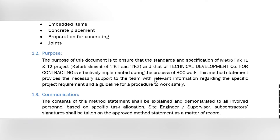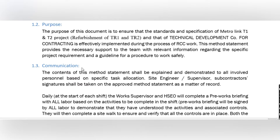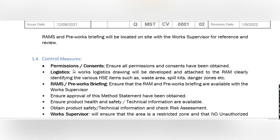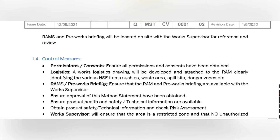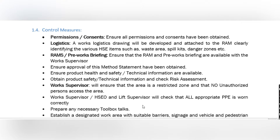For communication, the content of this method statement shall be explained and demonstrated to all involved personnel via specific toolbox talks on location. Site engineer, supervisor, and subcontractor signatures shall be taken on the approved method statement as a record. Once the method statement is approved, you explain it to all people at site and take their sign. For control measures, you describe permission, consent, logistics, RAMS, pre-work briefing, and work supervision — ensuring restricted zones with no unauthorized access.